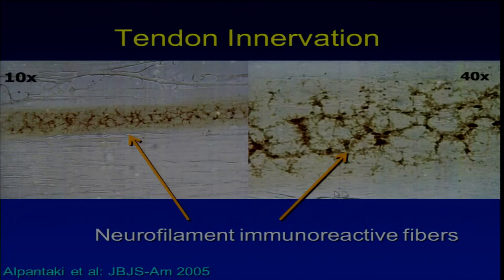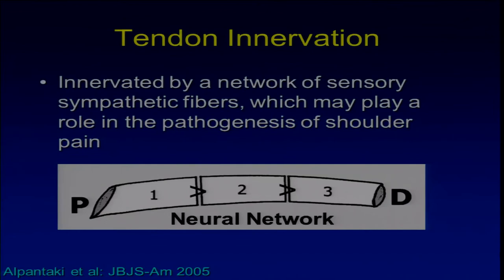Also, if you look at the tendon itself, there are neurofilament immunoreactive fibers — the pain receptors — making a network inside the tendon. This neural network is most predominant in the proximal part of the tendon and least predominant in the distal part. These are the reasons why the long head of the biceps is called the pain generator.